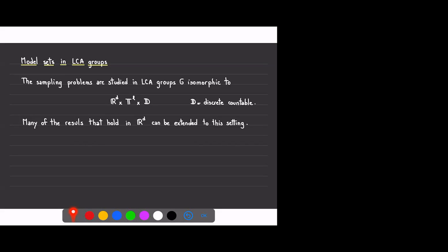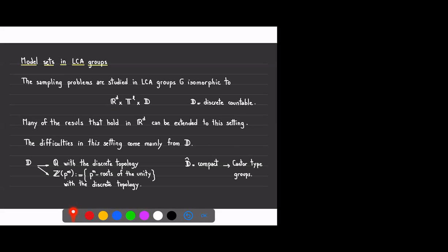The difficulties in this group come from the discrete part D, because this countable abelian group can be very weird — for instance, it could be the rational numbers with the discrete topology, or a Prüfer group. The part R^d times T^k is very nice with a lot of good analysis, but the group D is really the source of all the difficulties.